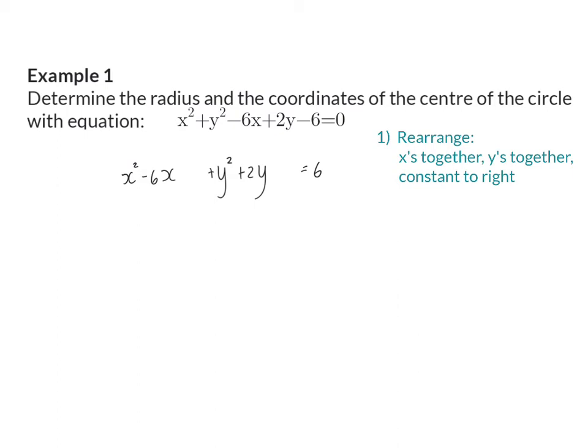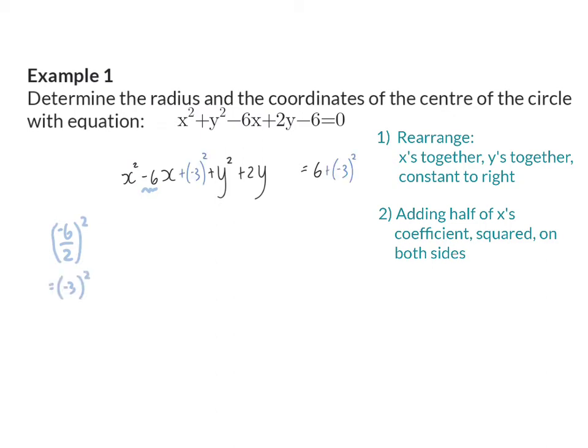Now we are going to follow the steps of completing the square twice. That is to take half of x's coefficient, squared, and add it on both sides. Then we are going to repeat this for y's coefficient.